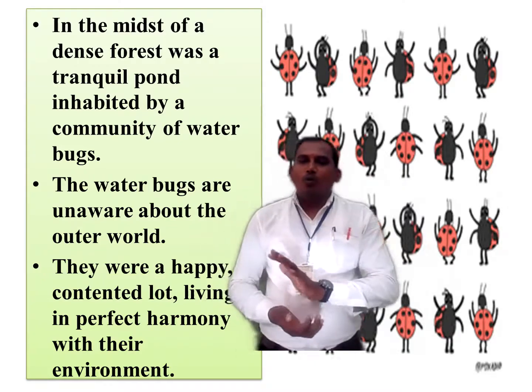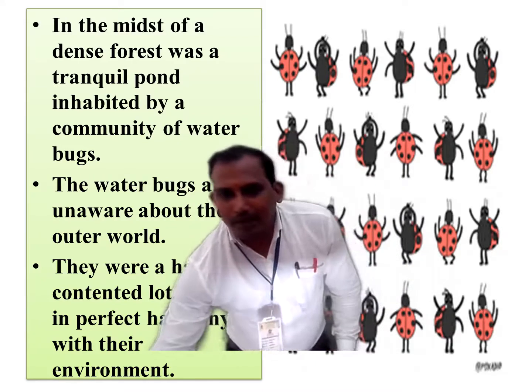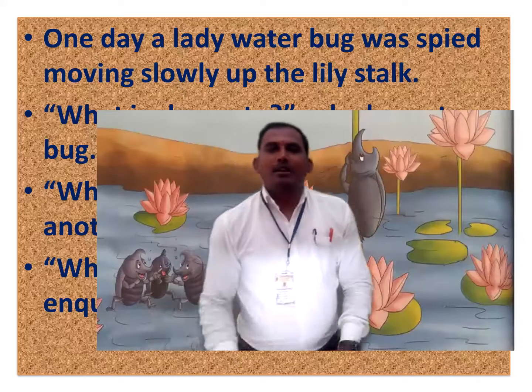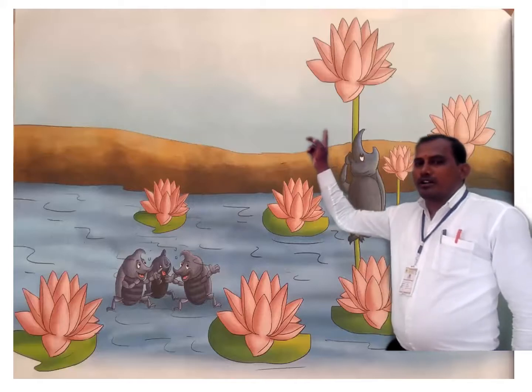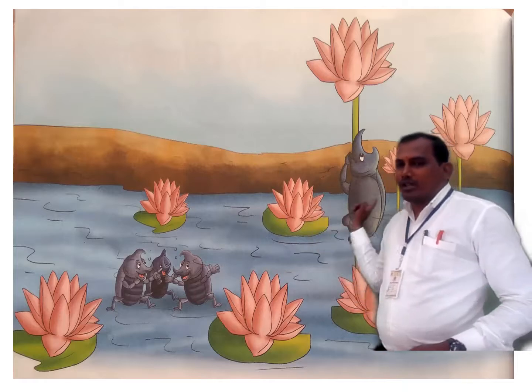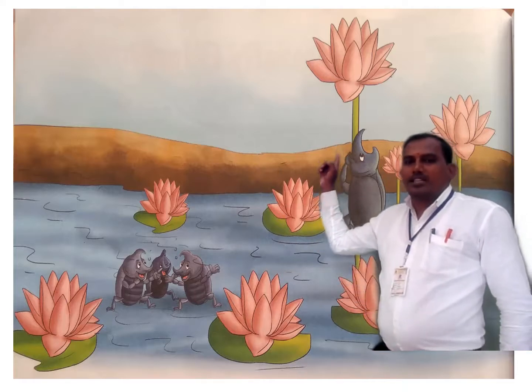One day, one water bug climbed out of the water with the help of the lily stalk — as you can see in the picture, this water bug is climbing out of the water. And the other water bugs started discussing: what has happened? Where is she going? As we all know, if we are doing something different, our colleagues start to discuss about us. They don't know where she went, but they started discussing.